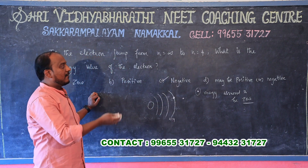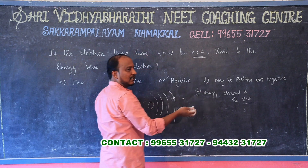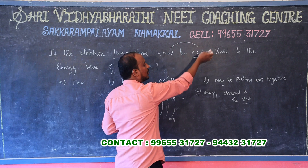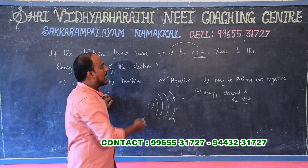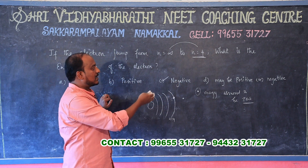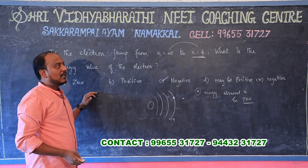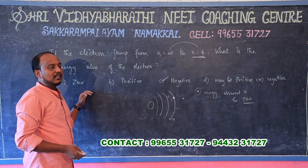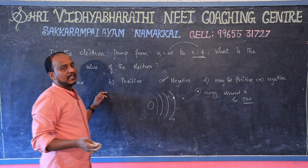So whenever an electron jumps from the infinite level to any shell, its energy automatically decreases and it possesses negative electronic energy. This is the answer to this question. For more questions like this and how to solve them, join our academy. Thank you and all the best.